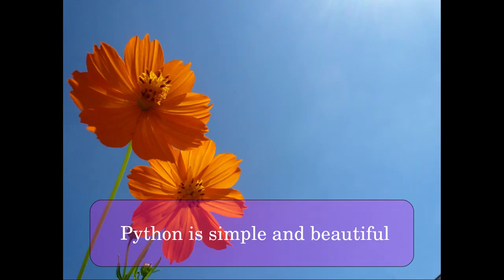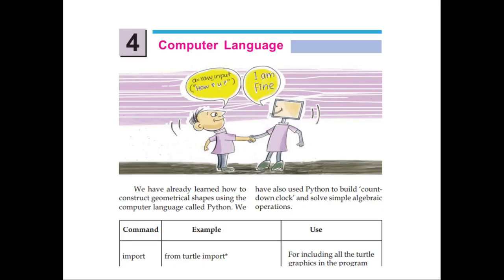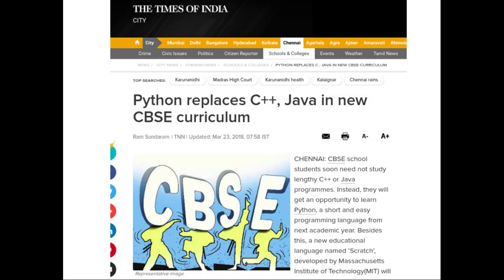Python is very beautiful, simple, and very easy to learn. If you see in Kerala, the government state board syllabus for 8th standard students has Python in their book — from 8th standard they are starting to study Python. This is a screenshot of the 10th standard book from Kerala. A recent Times of India report also stated that Python replaces C++ and Java in the new CBSE curriculum.